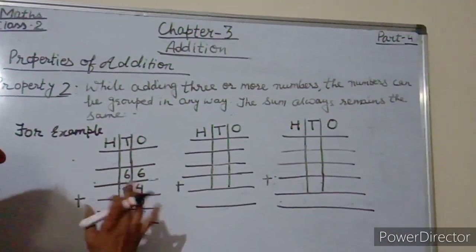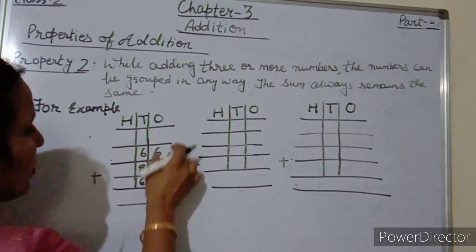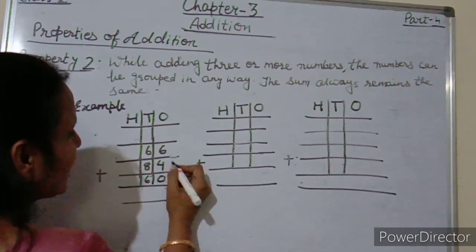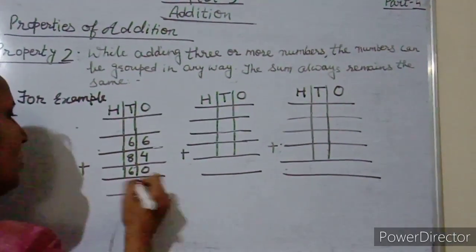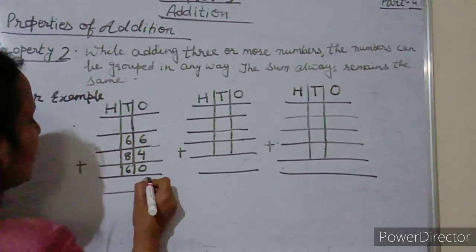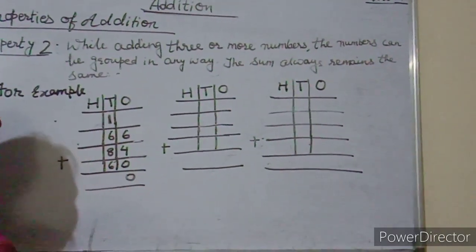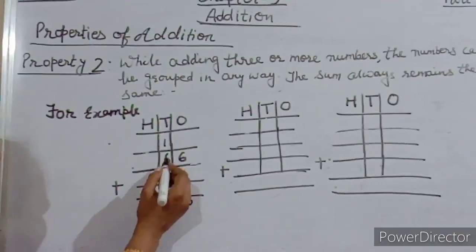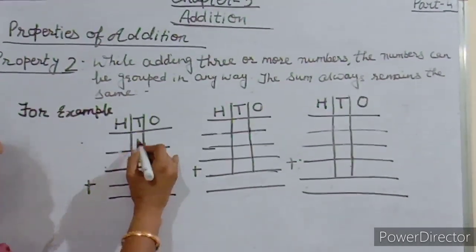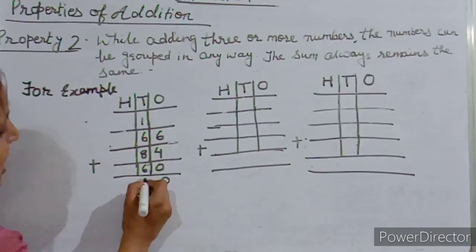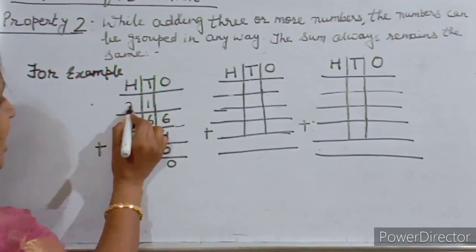Here we are adding 3 numbers: 66, 84, and 16. Start from the ones place. 6 plus 4 is 10, so write 0 and carry 1. At the tens place, 6 plus 8 plus 6 equals 14 plus 6 equals 20, plus 1 carry is 21. Write 1 at the tens column and carry 2.